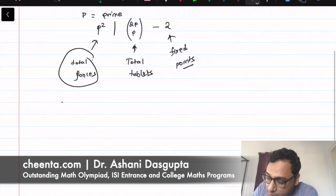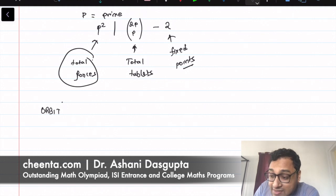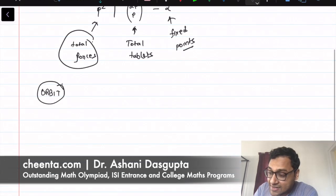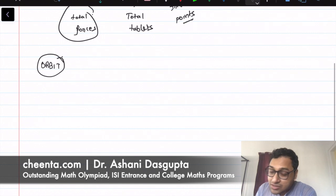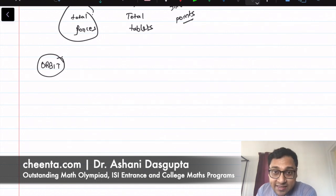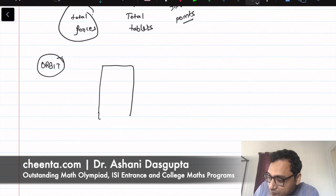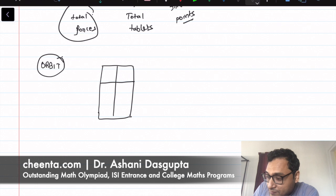What is an orbit? I'll give you an example because that's the way I actually understand it. You will immediately understand the meaning of the word orbit. So let's start with one tablet.